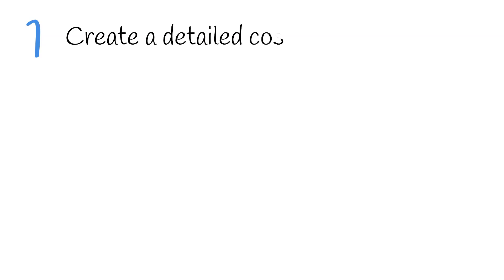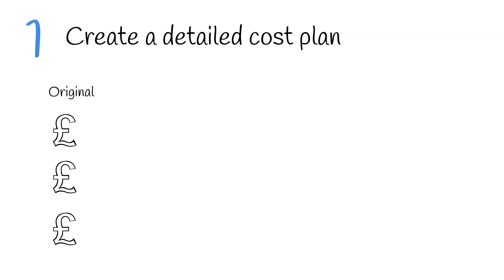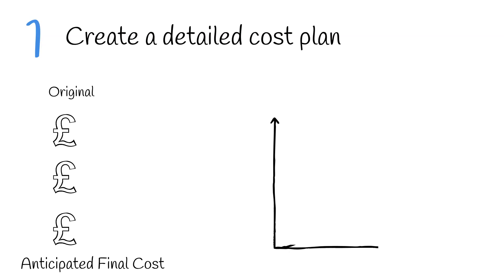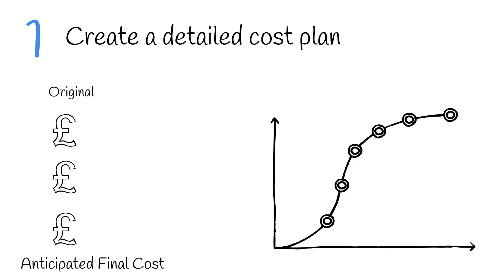The first tip is to create a detailed cost plan. A detailed cost plan provides a breakdown of the project budget estimate. It's essential for effective cost management and can be used to track value and spend on a project against the anticipated final cost. It usually includes a forecast showing anticipated spend on a project from start to finish, which is then used to compare movement and spend month on month with the original forecast.